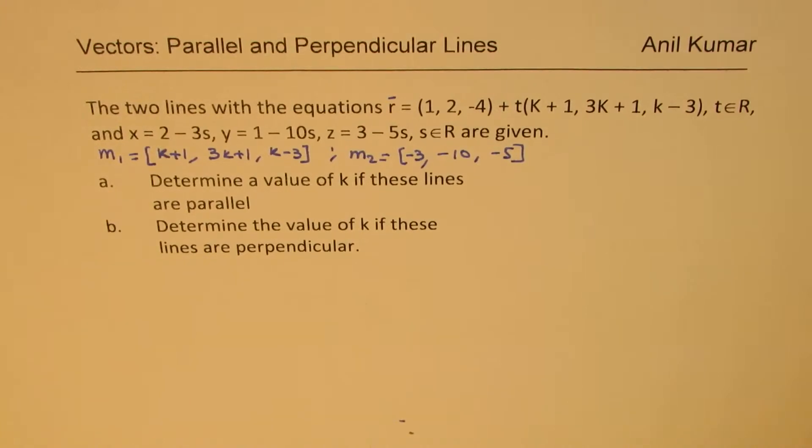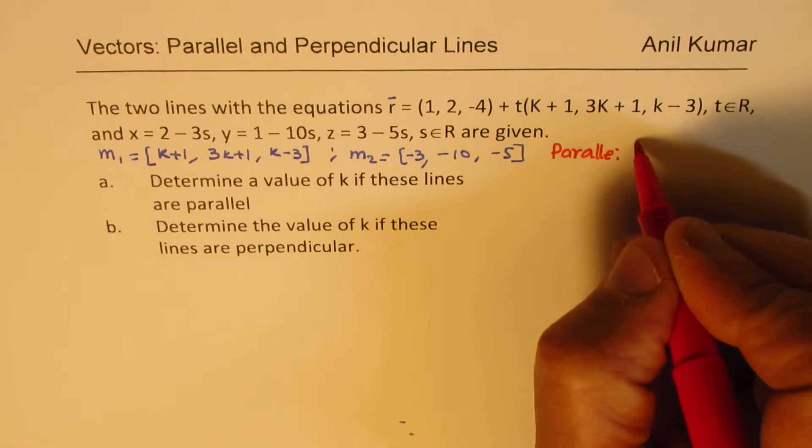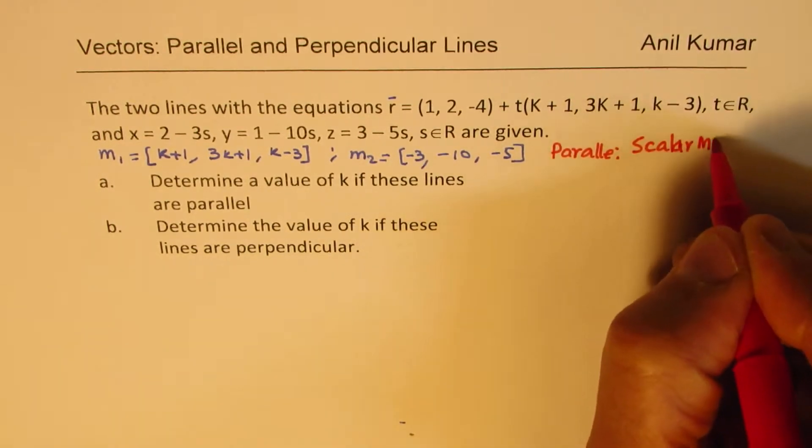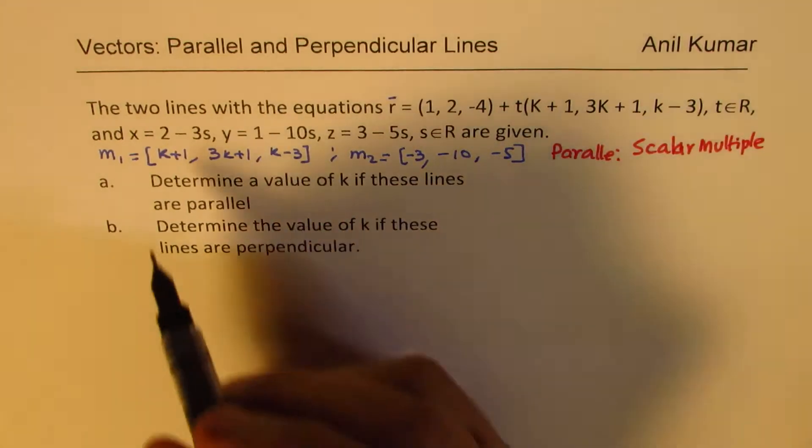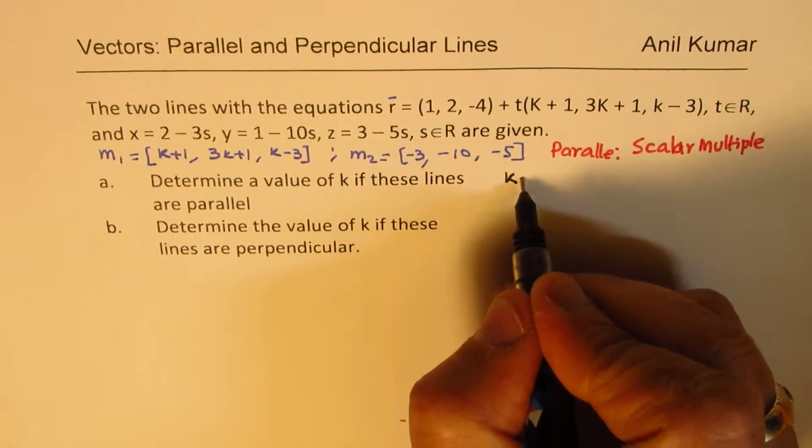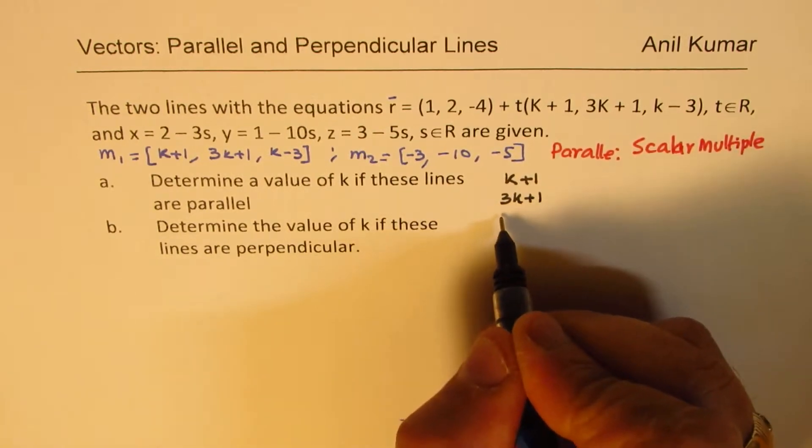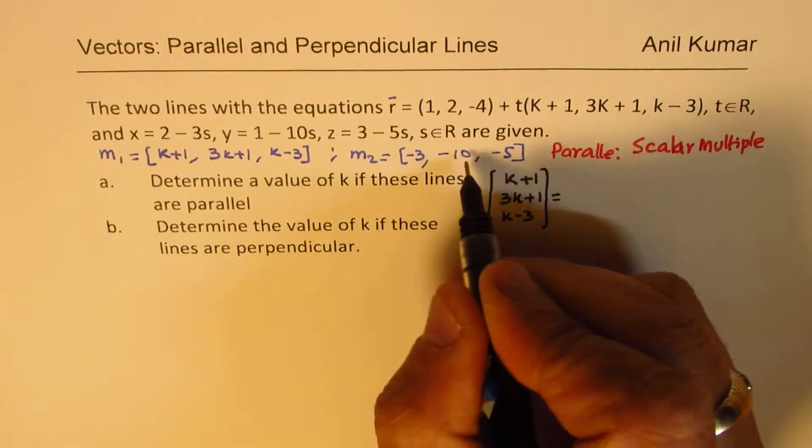Now if we want them to be parallel, then what is the condition? Let's write down first for parallel. Parallel means scalar multiple. Direction vectors should be scalar multiples. So we can write the first direction vector (k+1, 3k+1, k-3)...